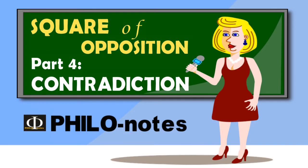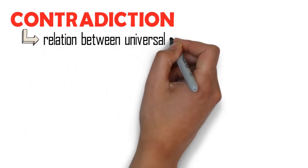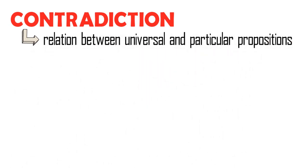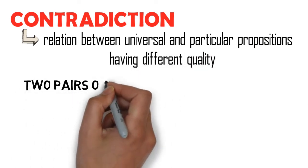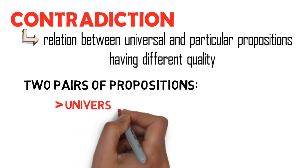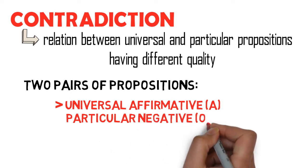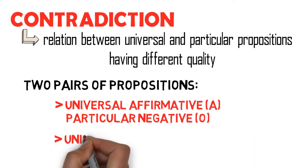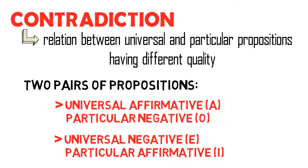This is called contradiction. A contradiction is a relation between universal and particular propositions having different quality. Hence, there are two pairs of propositions in a contradiction: namely, universal affirmative A and particular negative O propositions, and universal negative E and particular affirmative I propositions.